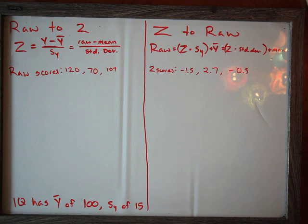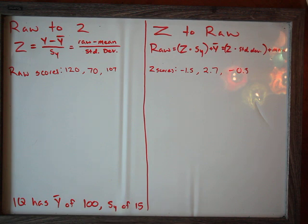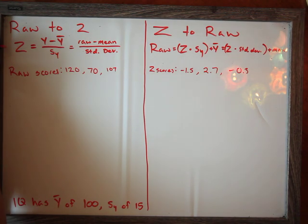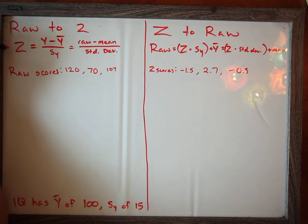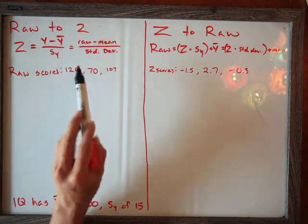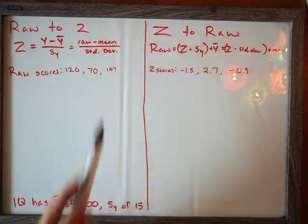Here we're going to be working with IQ data. IQ has a mean, which is represented as Y-bar, of 100, and a standard deviation, which is S sub Y, of 15. So that's a mean of 100 and a standard deviation of 15. Here we have our formula for converting raw scores to z-scores: a z-score is the raw score minus the mean divided by the standard deviation — raw minus mean over standard deviation.